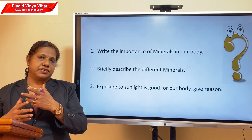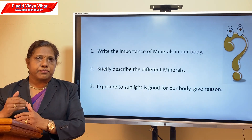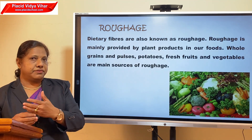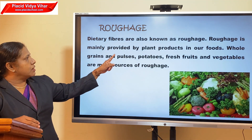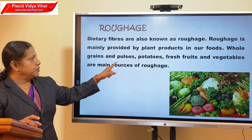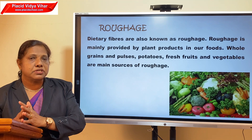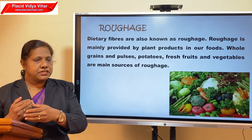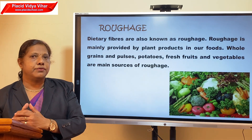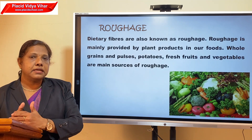Now we can move on to dietary fibers. Dietary fibers and water are not nutrients but they are very important for the proper functioning of our body. Dietary fibers are also known as roughage. Roughage is mainly provided by plant products in our food — whole grains and pulses, potatoes, fresh fruits, and vegetables are the main sources. Roughage adds bulk to our food and helps in removing undigested food from our body, so including roughage-rich foods is very important for a healthy digestive system.